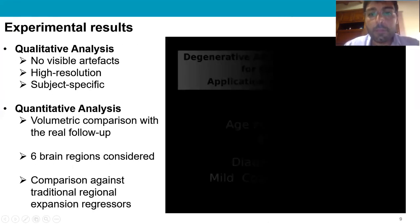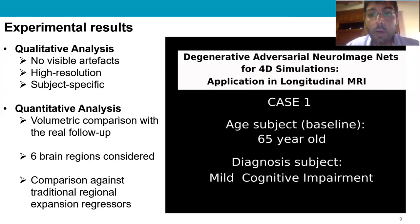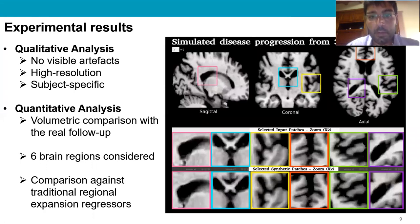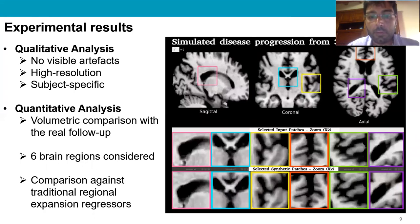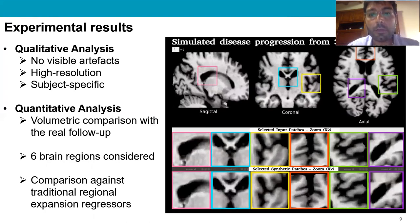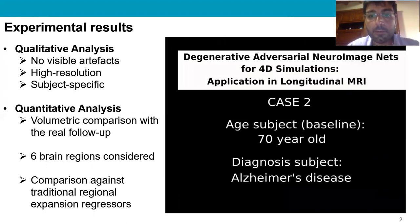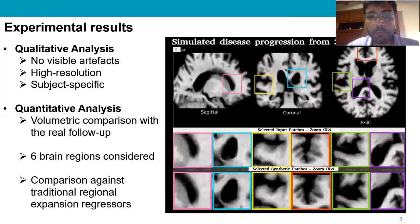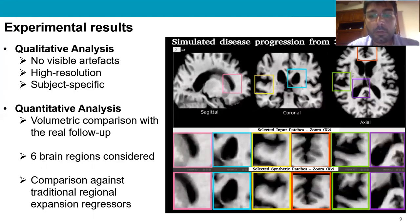The video in this slide shows an example of the entire simulation obtained using 4D-DANINET. Neurodegeneration is apparent in the progression, and the main manifestations are ventricular expansion, hippocampus contraction, and cortical thinning. From this video, we can see three facts: first, our system does not produce visible artifacts; second, the images have high resolution; and third, by looking at the details at the bottom, we can see that the progression is subject-specific.